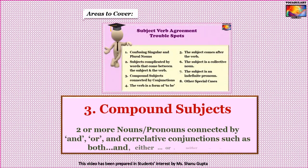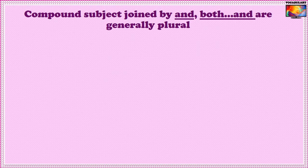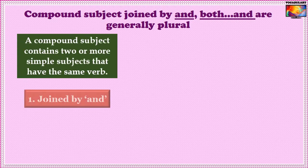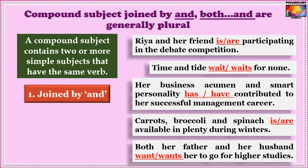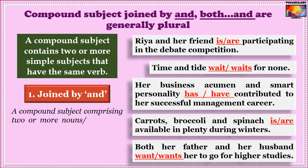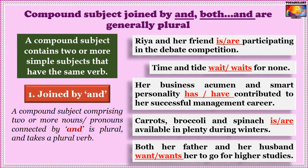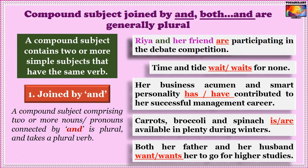The third area creating complications is compound subjects. A compound subject contains two or more simple subjects joined together that share the same verb. The way these subjects are joined determines whether the compound subject takes a singular or a plural verb. If the constituent nouns or pronouns are joined by AND, the compound subject is plural and takes a plural verb.